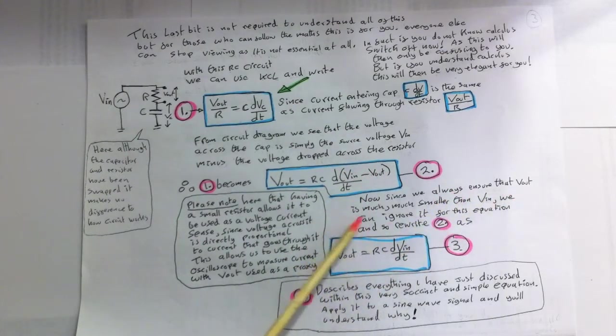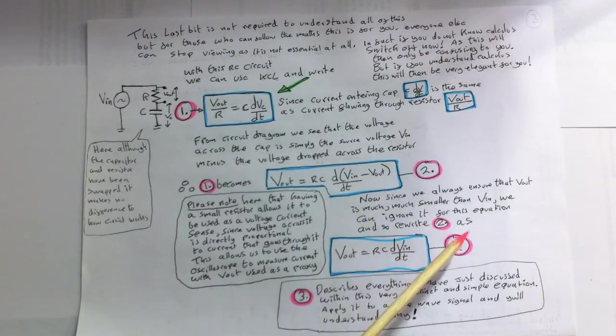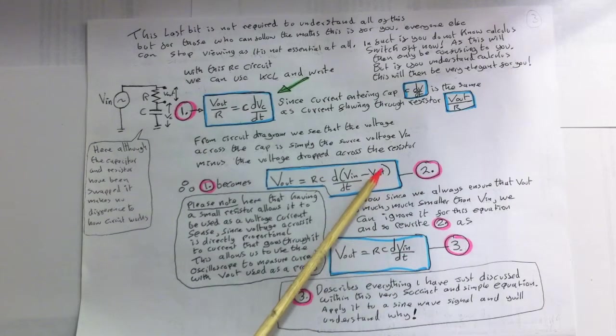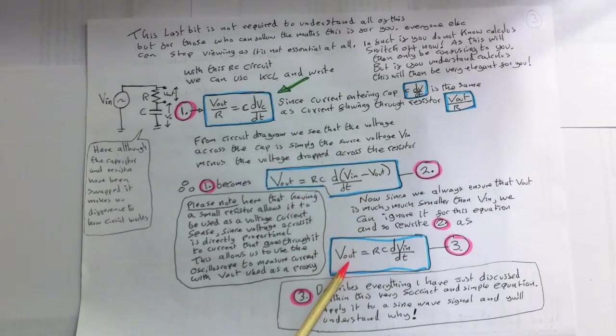Now since we always ensure that Vout is much, much smaller than Vin, we can ignore it for this equation. And so we write 2 as 3. So we're going to ignore this now, because it's so small. And we just end up with this equation 3. Vout equals RC dVin by dt.